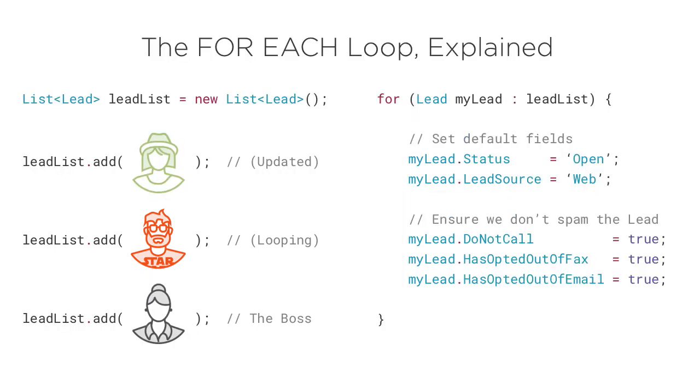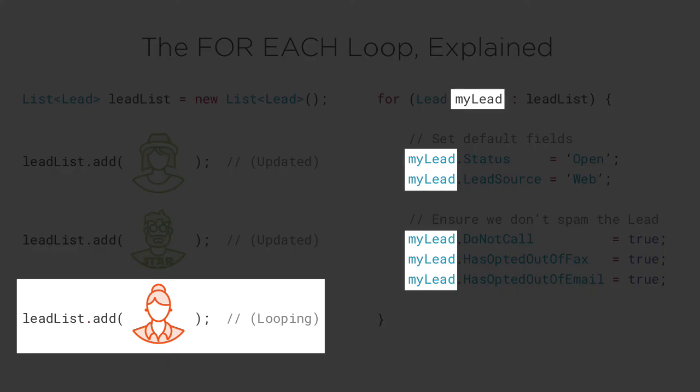Finally, we move on to the last record in our lead list, the boss. We temporarily assign the my lead variable to the boss, run our code block, and now the boss's fields have been updated.